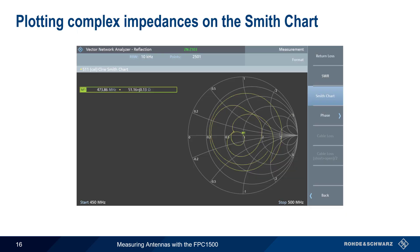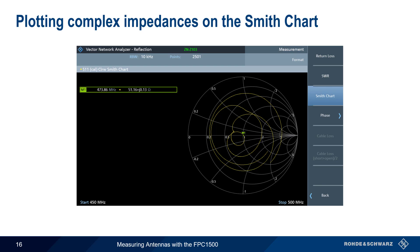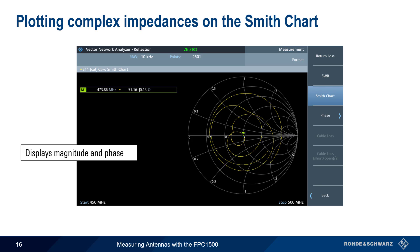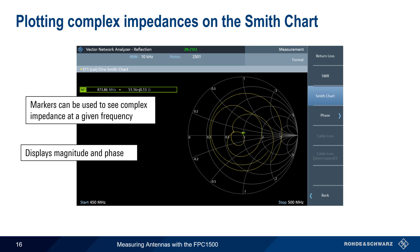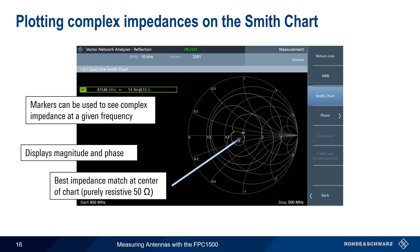The last display format we'll look at is the Smith chart. Unlike SWR and return loss, the Smith chart displays complex impedances — that is, both magnitude and phase. As with the other display formats, markers can be placed on the Smith chart, and these will provide the complex impedance at a given frequency. Note that the best impedance match, corresponding to the lowest SWR or highest return loss, will be the point closest to the center of the Smith chart.